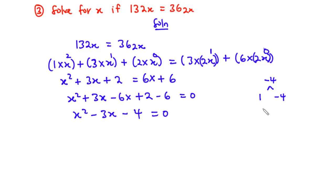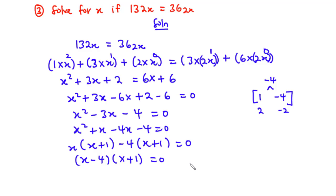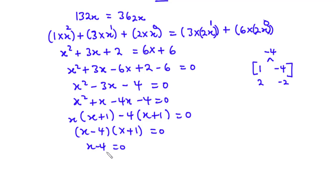The factor pairs are 1 and negative 4, and 2 and negative 2. Since 1 plus (negative 4) equals negative 3, we use this pair. So x squared plus x minus 4x minus 4 equals 0. Factoring: x(x plus 1) minus 4(x plus 1) equals 0, giving (x minus 4)(x plus 1) equals 0. Therefore x equals 4 or x equals negative 1. Since the equation is valid for positive values of x, x equals 4.